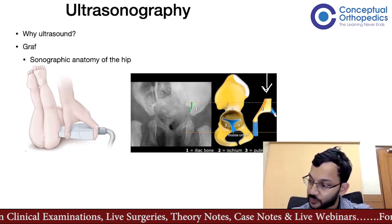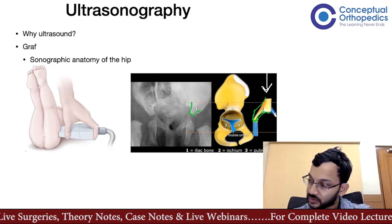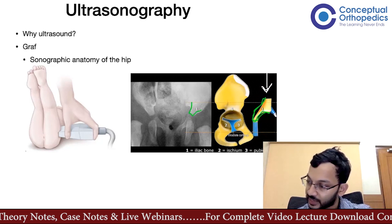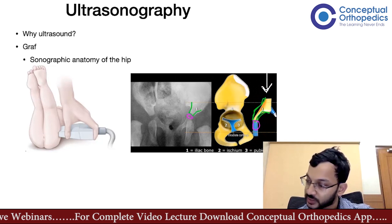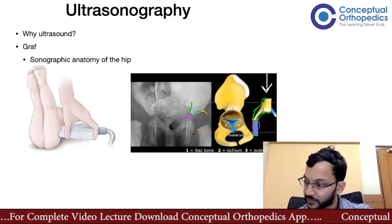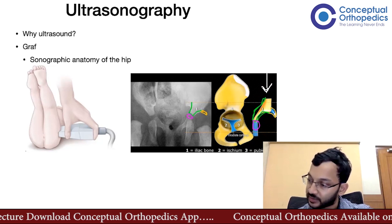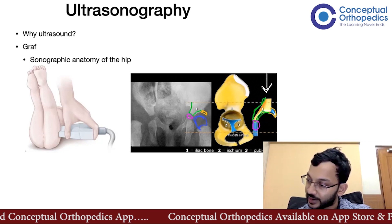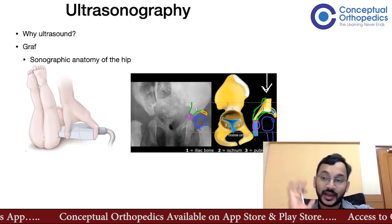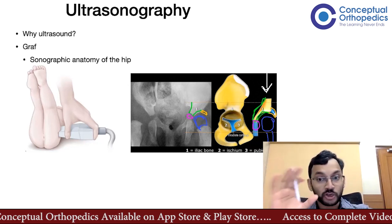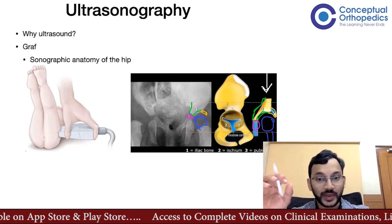On the ultrasound image you have the iliac bone, similar to what you see on X-ray. You have the triradiate cartilage in between. There are also structures you do not see on X-ray, such as the labrum. And of course you see the femoral head within the acetabulum. On ultrasound we see not just the bones but also the cartilages — both hyaline and fibrocartilage — as well as the muscles.